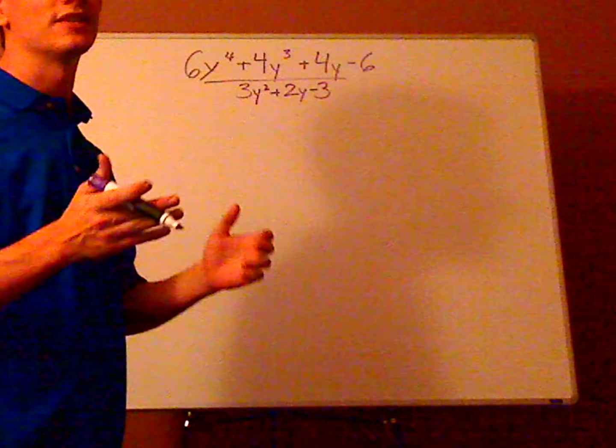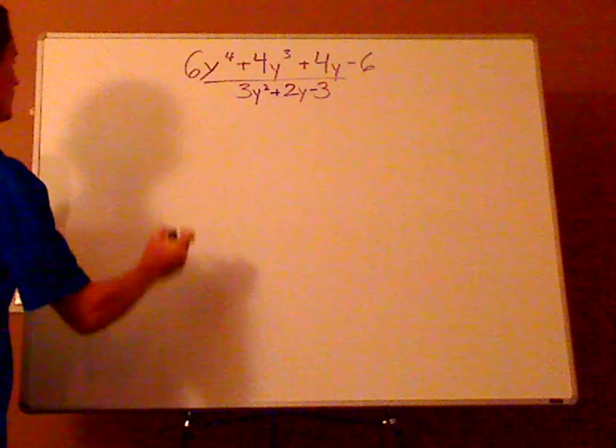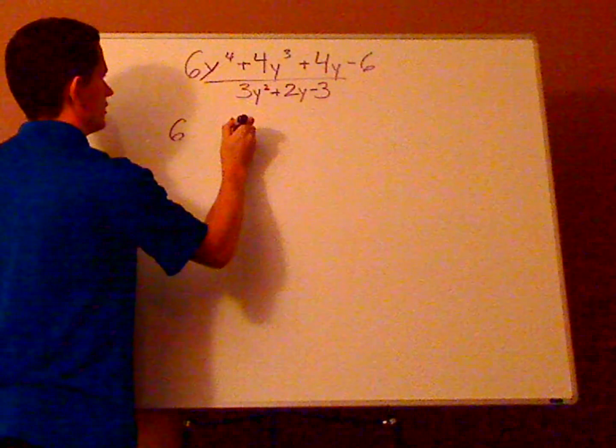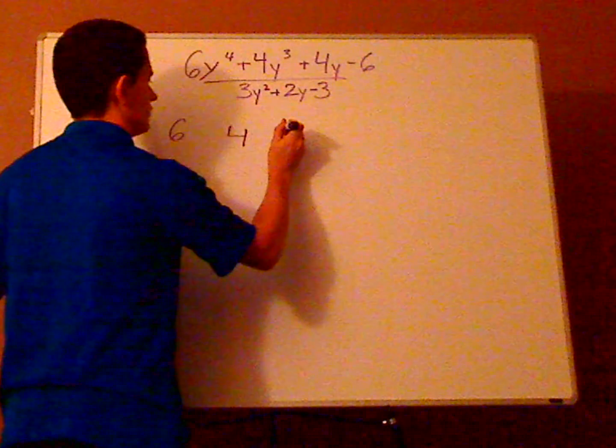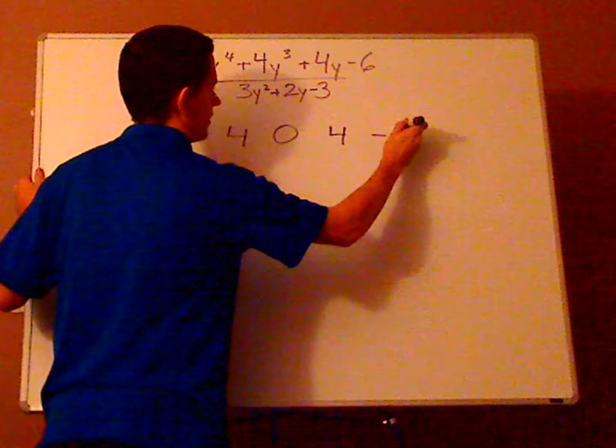So first you want to list off the coefficients. So you have 6, 4, now skips y squared so you put a 0 to fill in the gap, and you have 4 minus 6.